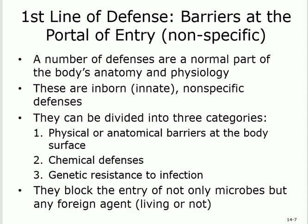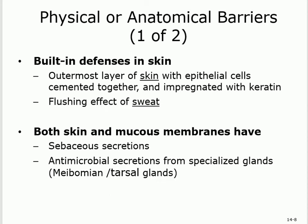Details on the first line of defense: these are the barriers. The first line is non-specific. The second line is also non-specific. The third is the only specific line — T and B cells. The first line, which is non-specific, consists of physical barriers, chemical barriers, and genetic barriers. All of these work together to block anything trying to enter.